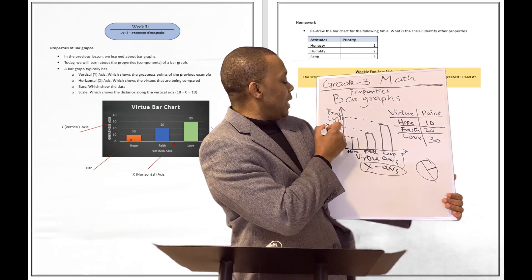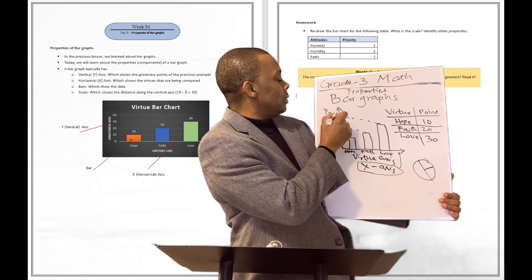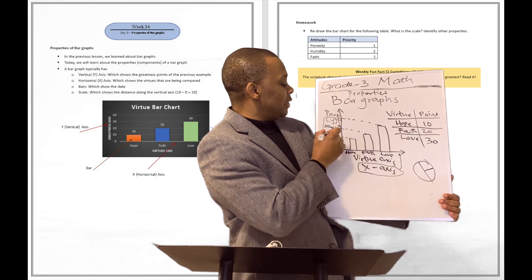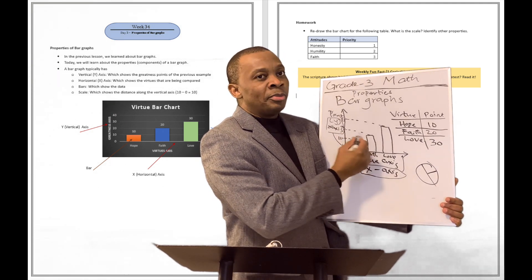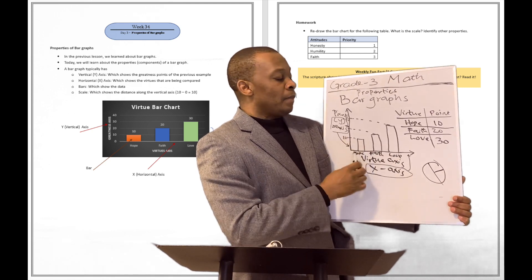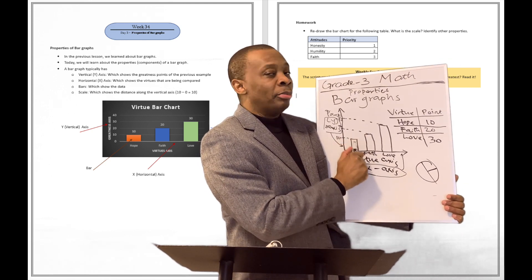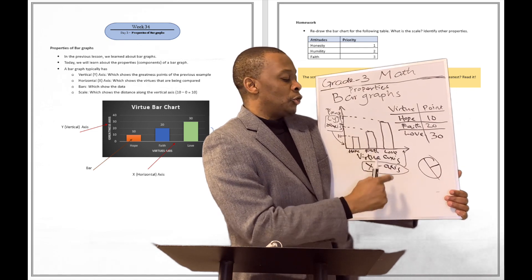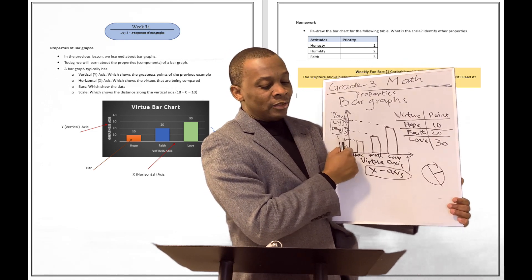Then the vertical line is another property. The vertical line is going to be the y-axis. It is the vertical line that shows the number of points — it shows how high a particular bar is going to be on this chart. That's called the y-axis.